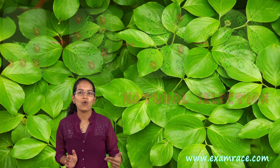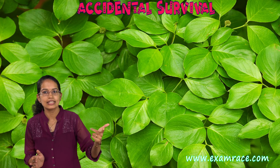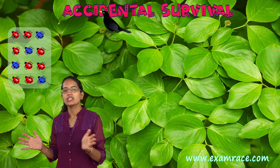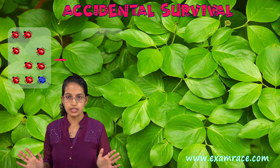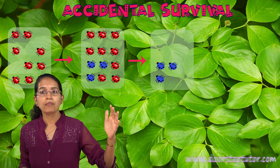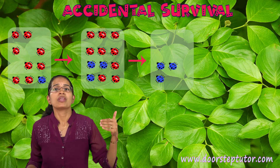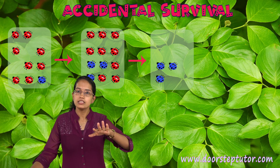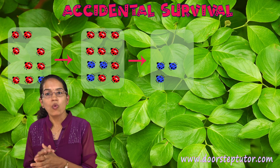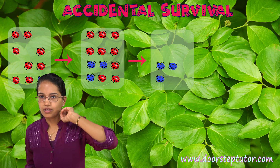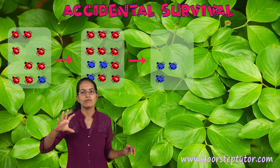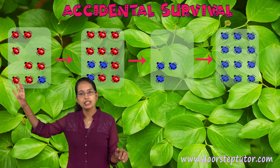The second case was another interesting case — a case of accidental survival. Again there was a species of red beetle, but also there was a color variation and there were some blue beetles. Suddenly there was a herd of elephants that crossed that region, and by chance when the herd was crossing, all the red beetles vanished. The blue beetles by chance escaped. Since the red beetle population vanished, the few blue beetles that were left would increase in population.